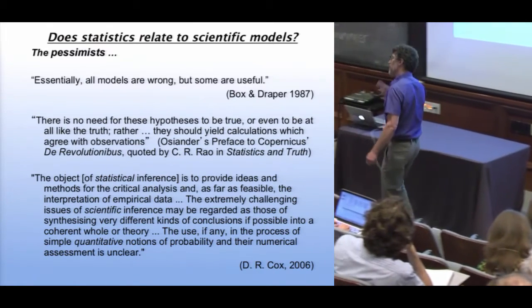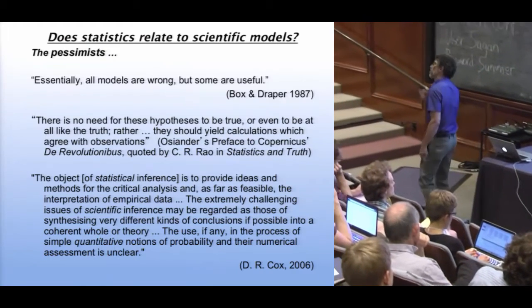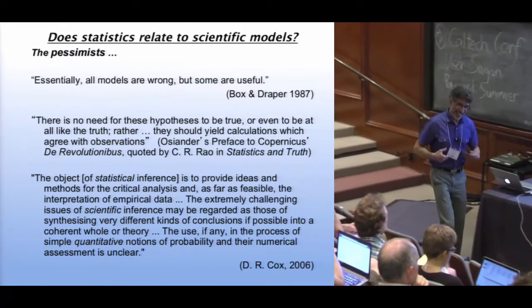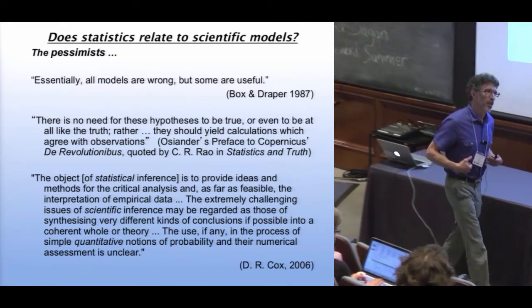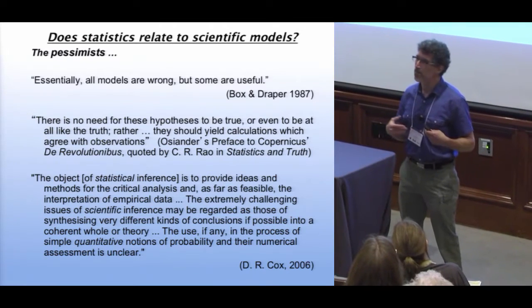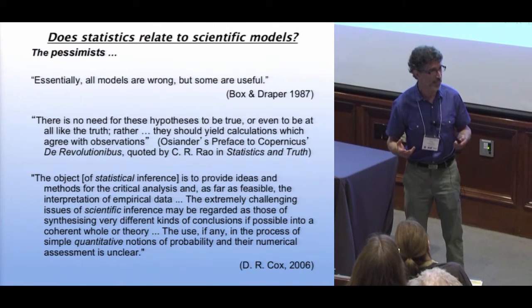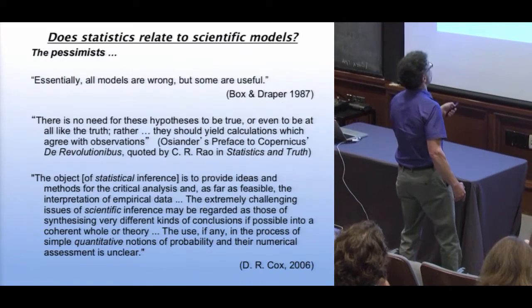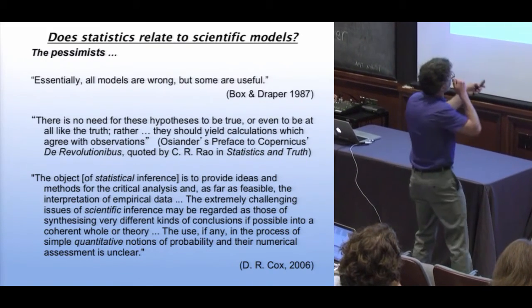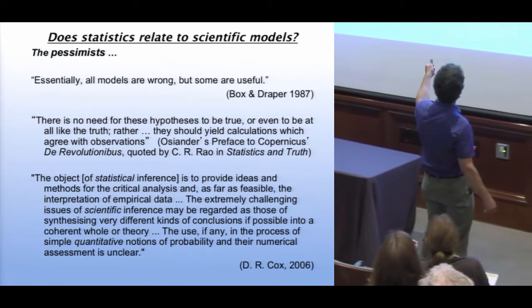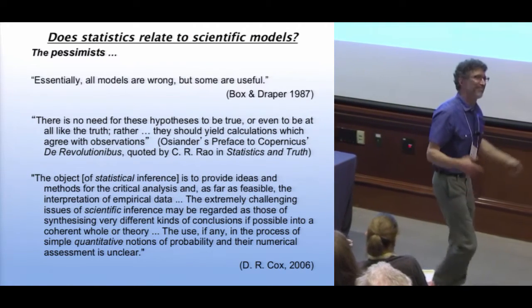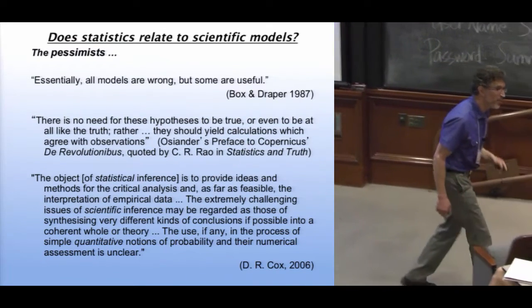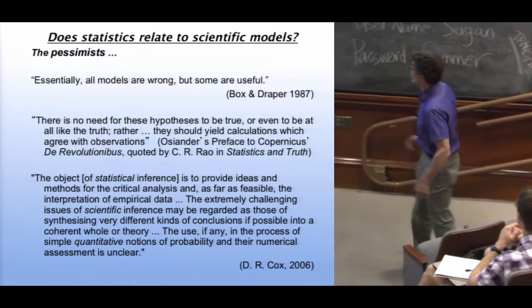When you ask statisticians how statistics relates to science, it ends up that most prominent 20th century statisticians are pessimists — incredibly negative. George Box, who just died, was the son-in-law of R.A. Fisher. He wrote very famously: 'essentially all models are wrong, but some are useful.' All models — your binary star models are all wrong. Come on, George Box.